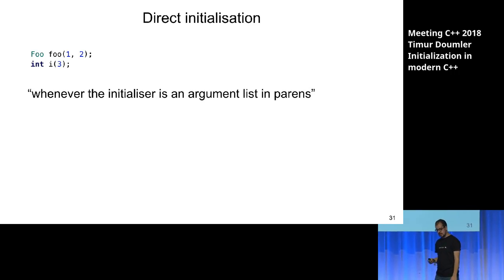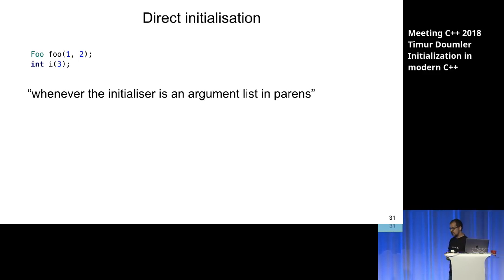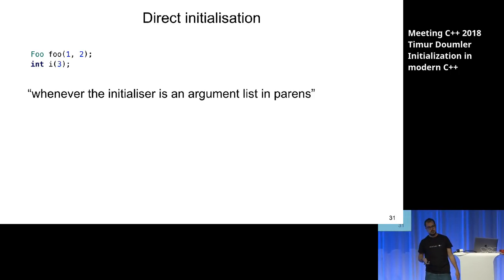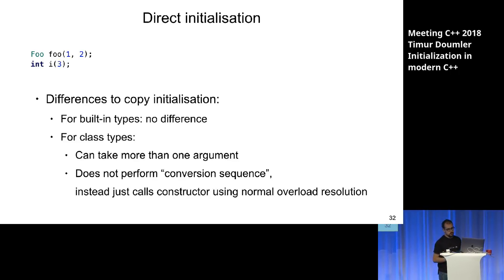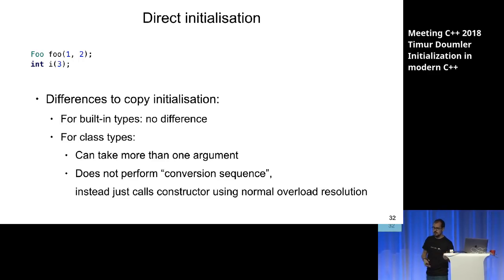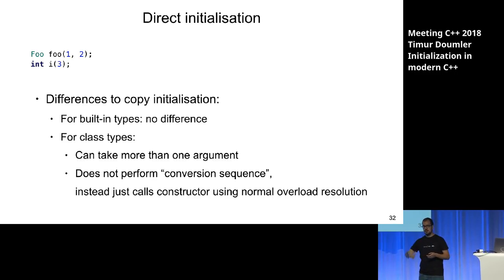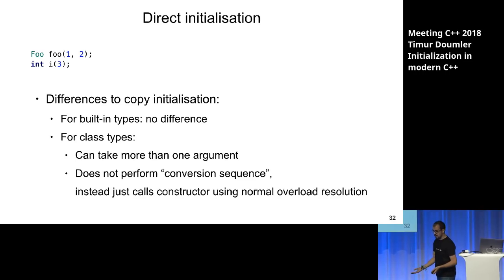Direct initialization is whenever the initializer is round parens with arguments inside. There are some differences between direct initialization with parens and copy initialization with equals. For ints there's no difference. But for class types, the direct initialization syntax can take more than one argument, which is useful for calling constructors. It does not perform the conversion sequence that copy initialization does; instead it performs overload resolution — like a function call. Round parens are the same syntax used to call regular functions.